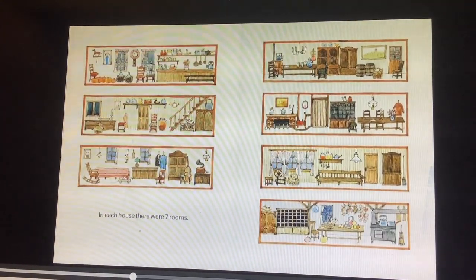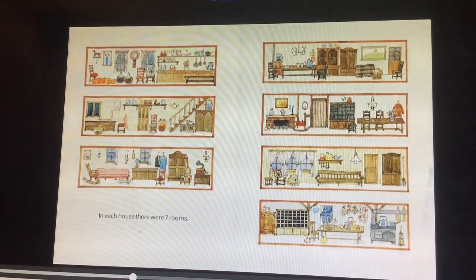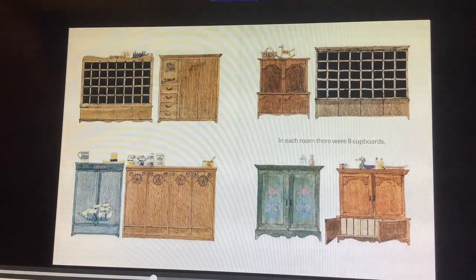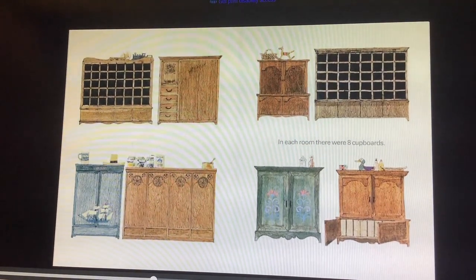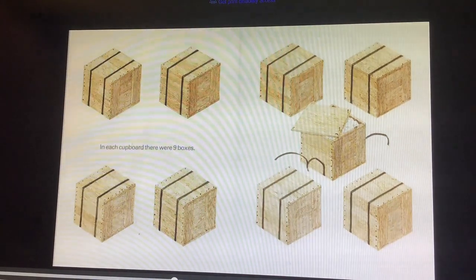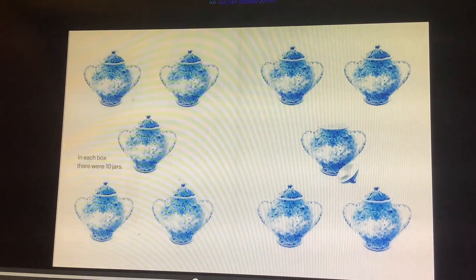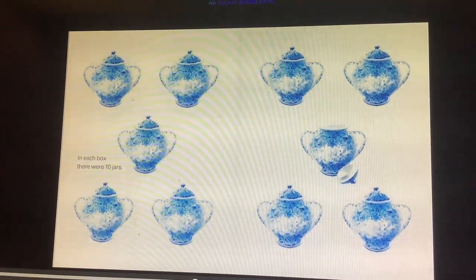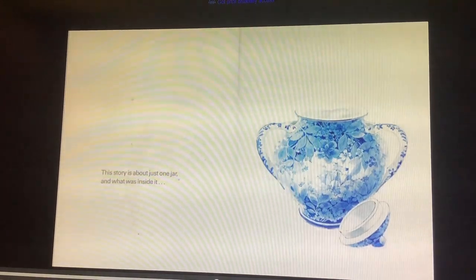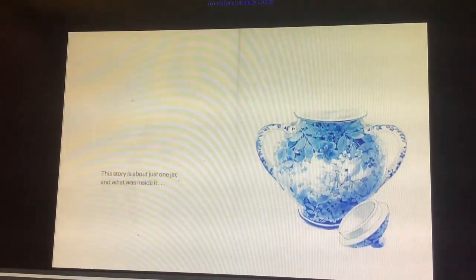In each house there were seven rooms. In each room there were eight cupboards. In each cupboard there were nine boxes. And in each box there were ten jars. This is the story about just one jar and what was inside.